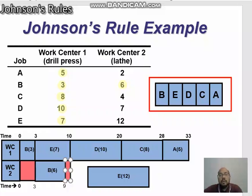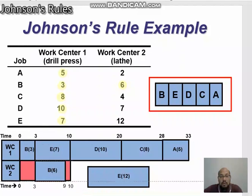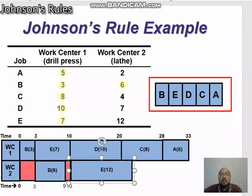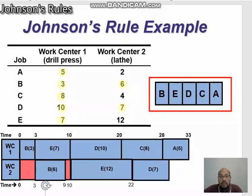Because job E is still at work center one, work center two is idle for one hour. Job E can only start after it finishes at work center one. So job E at work center two: 10 plus 12 equals 22 hours. After job E is job D, which takes 7 hours. Job D can start immediately after E finishes, so 22 plus 7 equals 29 hours.